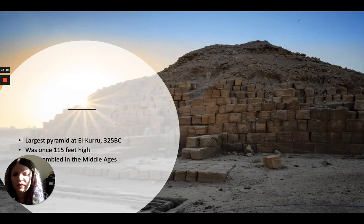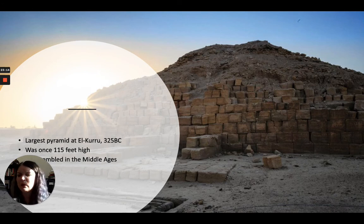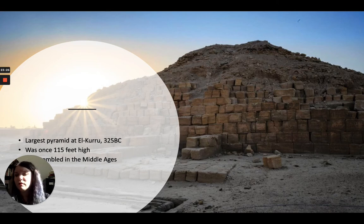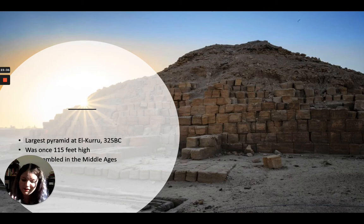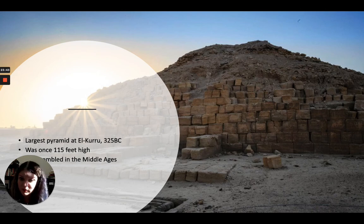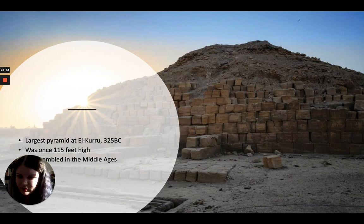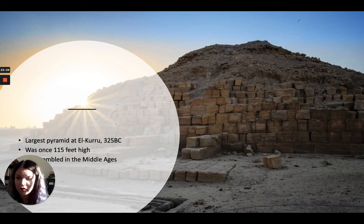It's not just these small steep pyramids — there's also a very large pyramid. The largest pyramid is at Al-Kuru, further south in what is now Sudan, built in 325 BC. It was once 115 feet high — a very formidable pyramid structure. Unfortunately it was disassembled in the Middle Ages. A lot of these artifacts, monuments, and structures have not fared very well in Sudan, partly because Western explorers and treasure hunters just didn't regard them as important and destroyed things. It's really frustrating. But we do have some remains of these materials so we can see what once existed.